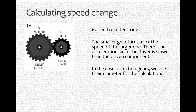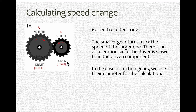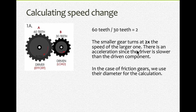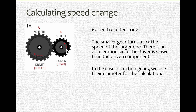Now we can calculate the speed change using a factor. Here I have 60 teeth for the larger gear and 30 teeth for the smaller one. So 60 divided by 30 gives a factor of two — the smaller gear turns at twice the speed of the larger one. It's two times as fast, so there's an acceleration since the driver is slower than the driven.